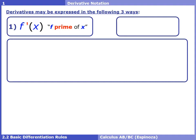Another way we can write the notation for a derivative — just like functions having two notations, f of x and y — we can also write a derivative as y prime. Again, same thing as f prime, and it's the same thing as slope.